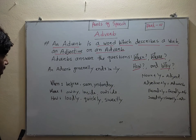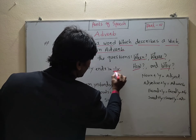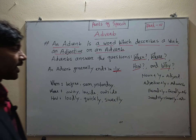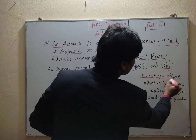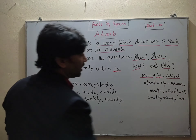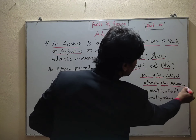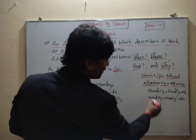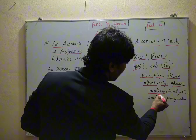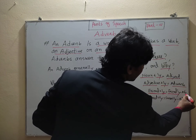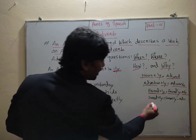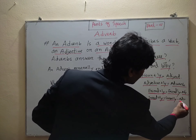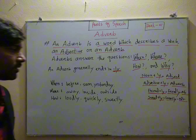An adverb generally ends in '-ly'. The pattern is: noun plus '-ly' gives an adjective, and adjective plus '-ly' gives an adverb. For example, 'friend' plus '-ly' gives 'friendly', which is an adjective. And 'sweet' plus '-ly' gives 'sweetly', which is an adverb.